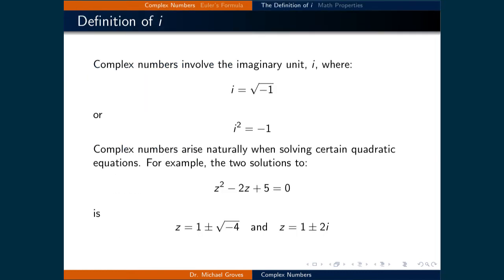Complex numbers involve the imaginary unit, denoted as the lowercase i, where i is equal to the square root of negative 1. It can also be written as i squared is equal to negative 1. Complex numbers arise naturally when solving certain quadratic equations. For example, the two solutions to z squared minus 2z plus 5 is equal to 0 is z is equal to 1 plus or minus the square root of negative 4, which can otherwise be expressed as z is equal to 1 plus or minus 2 times i.